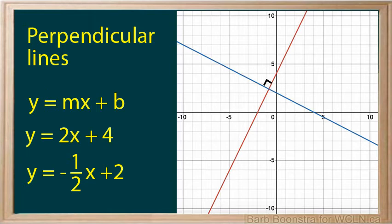Let's find the slope of each line. Notice that the slope of the red line is 2. The slope of the blue line is negative half. The slopes of perpendicular lines are negative reciprocals of each other.